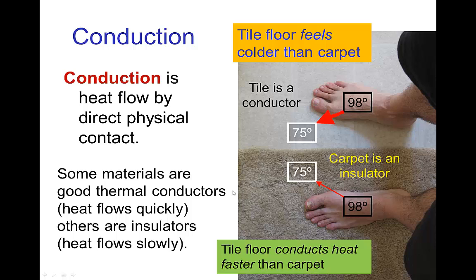Some materials are good thermal conductors, which means that heat flows quickly. So when I'm standing on a tile floor, the heat leaves my foot rather quickly, and for this reason the tile feels like it's cold. On the other hand, if I'm standing on a carpet, the carpet is an insulator and so the heat flow is rather slow, and for that reason the carpet feels warmer.